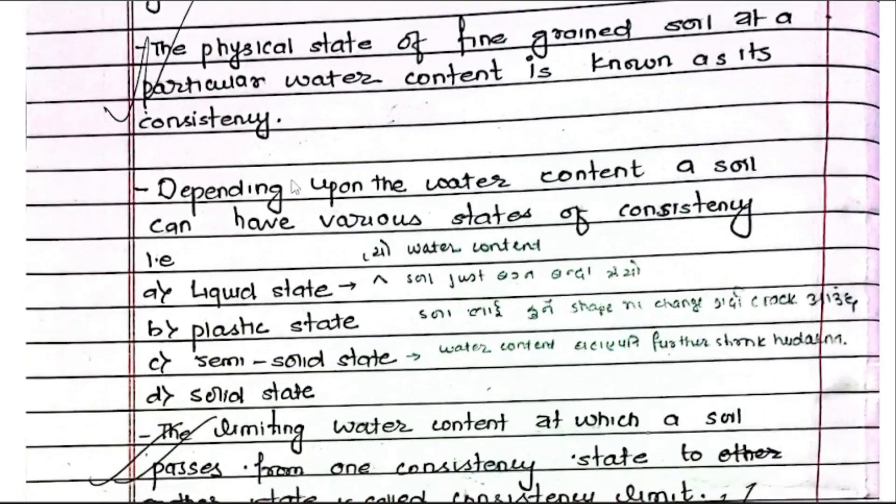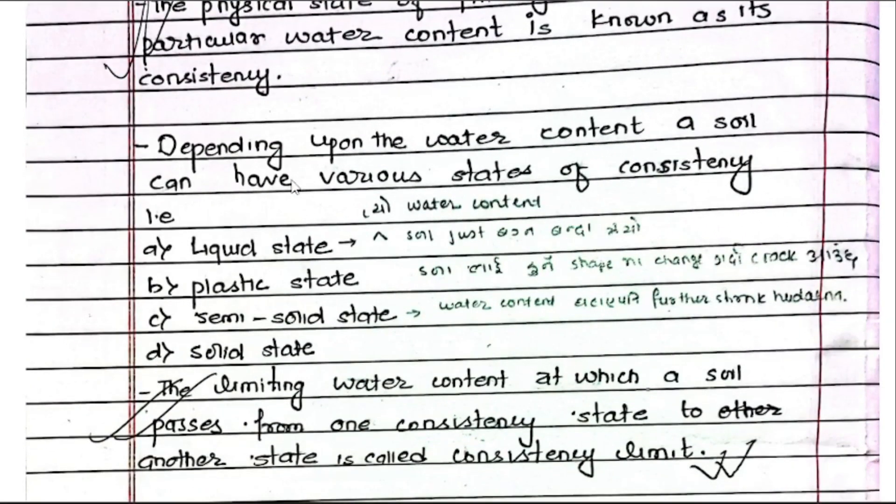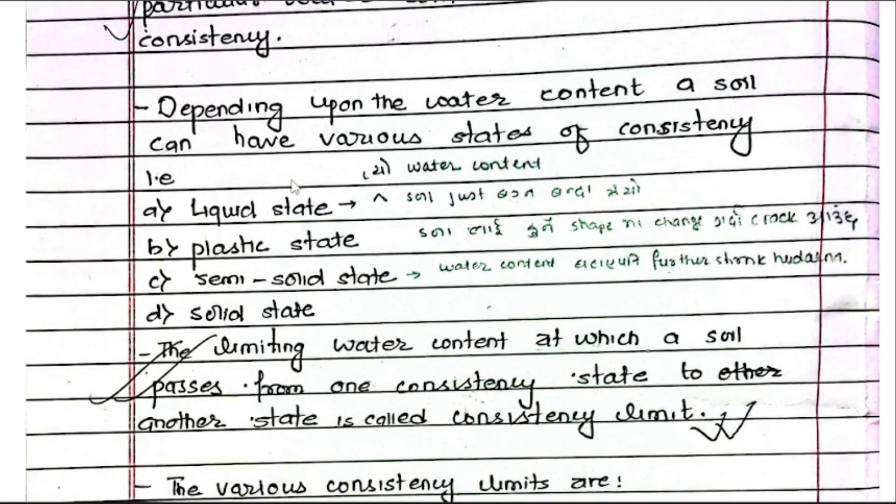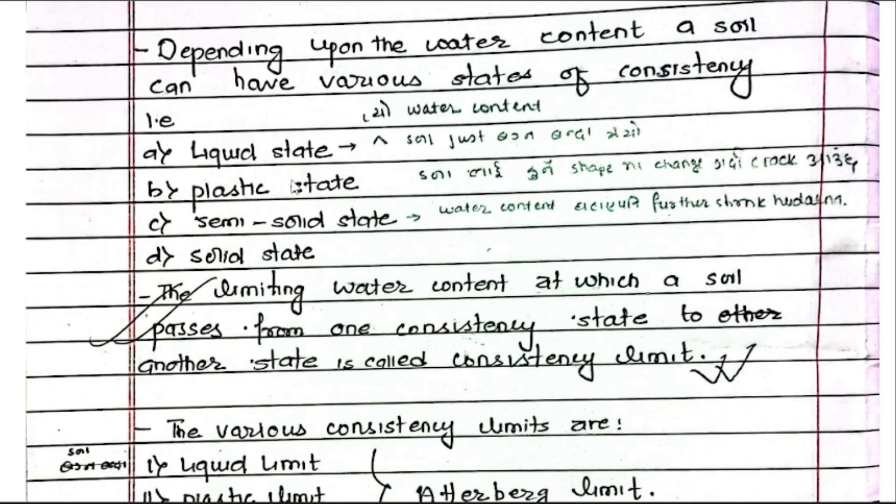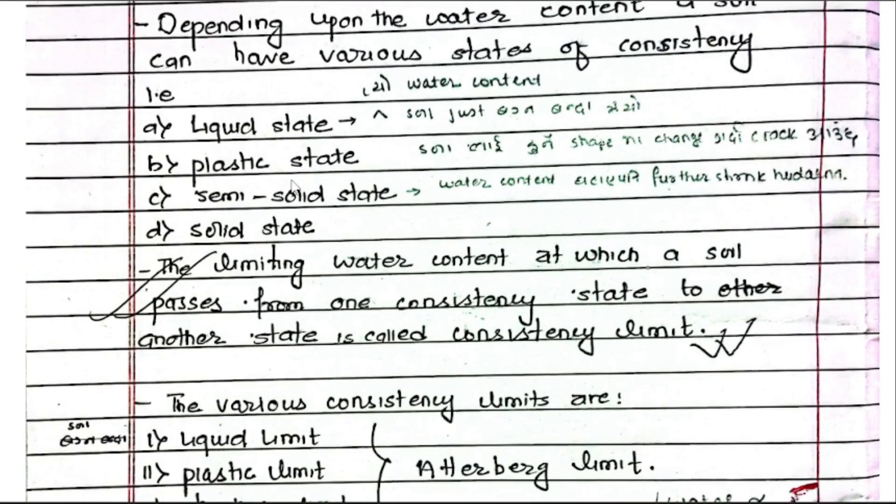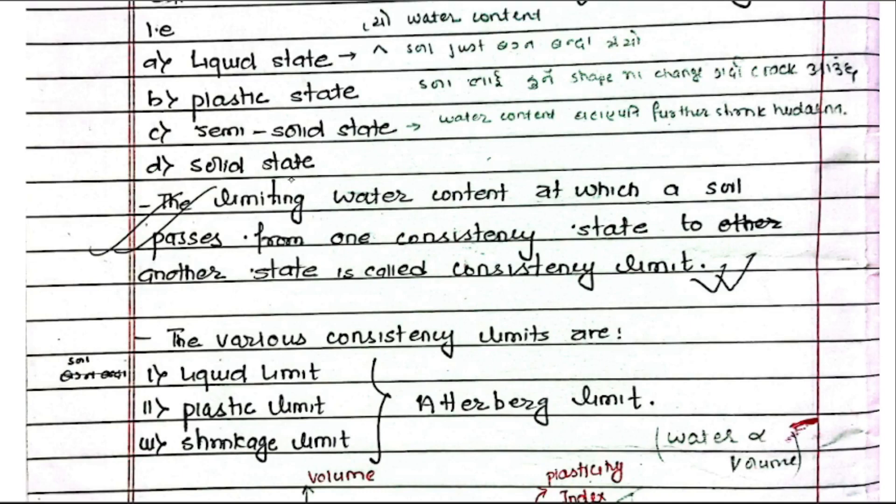Depending upon the water content, a soil can have various states of consistency. That is liquid state, plastic state, semi-solid state, and solid state.